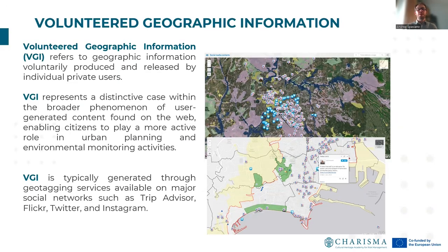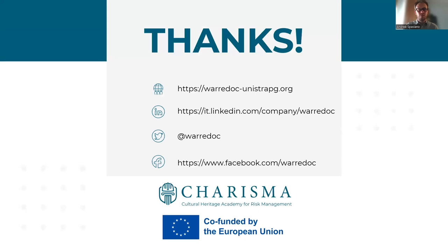Voluntary geographic information, or VGI, refers to geographic information voluntarily produced and released by individual private users. VGI represents a distinctive case within the broader phenomenon of user-generated content found on the web, enabling citizens to play a more active role in urban planning, environmental, and cultural monitoring activities. VGI is typically generated through geotagging services available on major social networks such as TripAdvisor, Flickr, Twitter, Instagram, or Facebook. Thanks for your attention. For any information, please visit our website and follow us on social media channels.